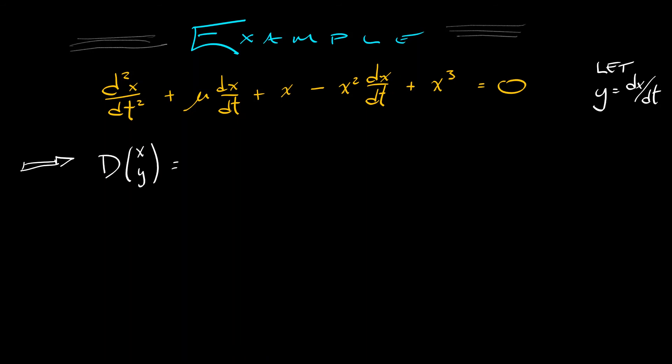And then I'm going to look at the first-order system on the vector x and y. The derivative of x is y, of course. The derivative of y is the second derivative of x, which is minus x minus mu times y plus x squared y minus x cubed.